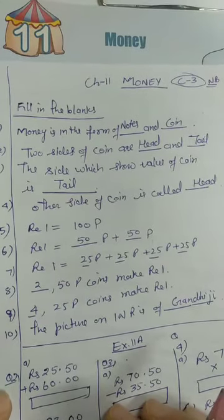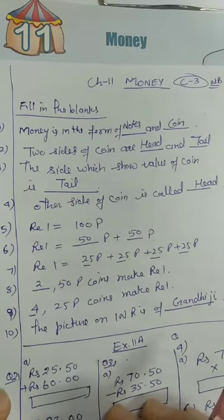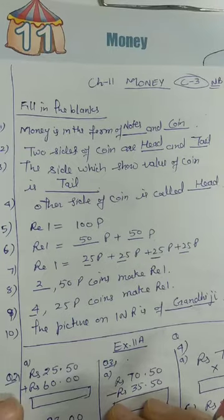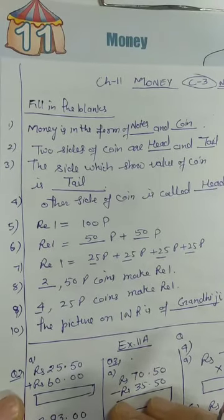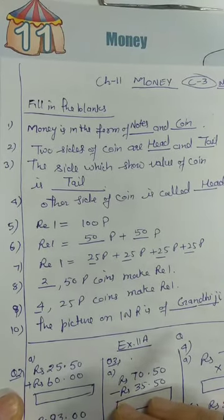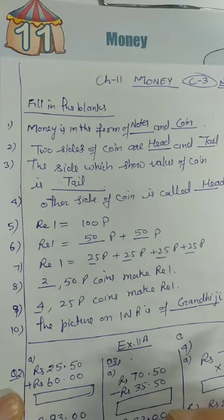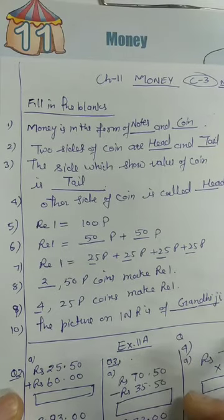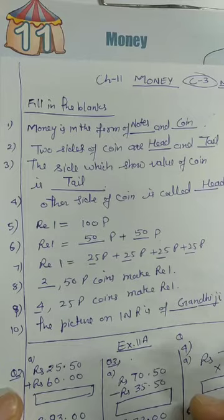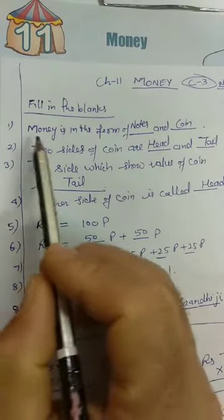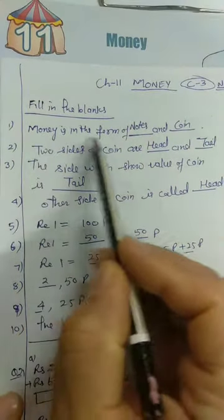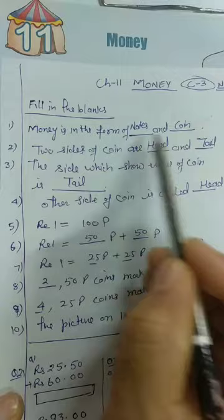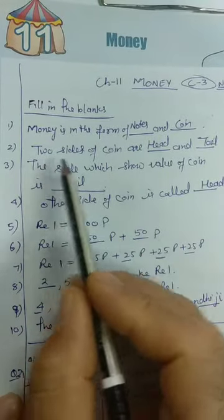Hello everyone, today we are going to start Chapter 11 for Class 3 students. The chapter name is Money. Let's start with some fill in the blanks as an introduction. As you know, money is in the form of notes and coins, so the first fill in the blank can be: money is in the form of dash and dash — you can write notes and coins.